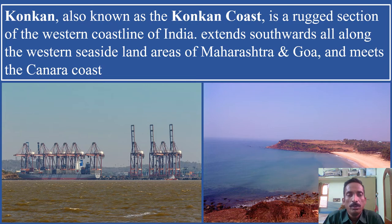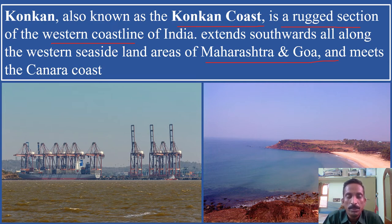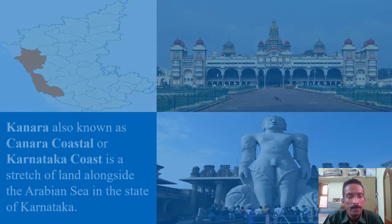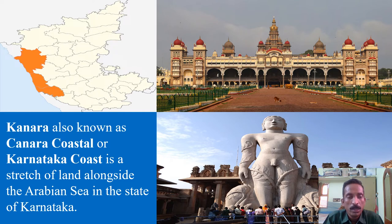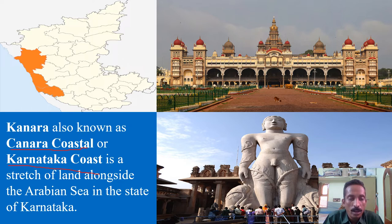The Konkan Coast is a rugged section of the western coastline of India, extending southwards along the western side of Maharashtra and Goa. It then meets the Canara Coast, also known as the Karnataka Coast, which is a stretch of land alongside the Arabian Sea in the state of Karnataka.